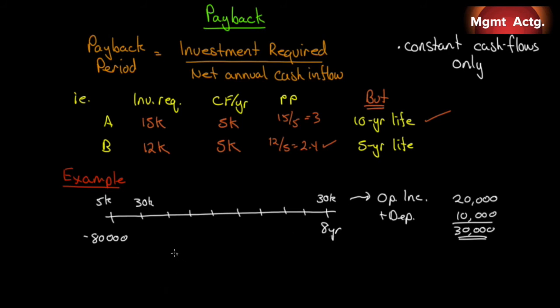So $75,000 divided by $30,000 equals 2.5 years payback. If you're looking at this saying that's kind of juvenile and naive — yes, it is. We bring it up only because if you're in a small business, it may not be worth going through the NPV analysis. A payback of 2.2 or 1.8 years may be good enough. It's certainly not a serious measure of the value of a project, but it's useful where you don't really need a lot of precision.